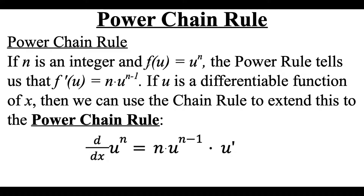So if n is an integer and f of u equals u raised to the nth power, if we were to do the power rule, we would drop that n power down as a multiplier, but then subtract 1 from the power. Now if u is some differentiable function of x, we can use the chain rule and extend this into what's called the power chain rule. So we drop the power down as a multiplier, subtract 1 from it, but then multiply by the derivative of whatever that inner function u was.